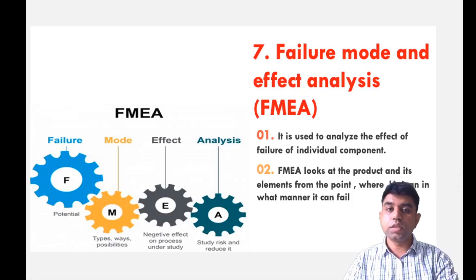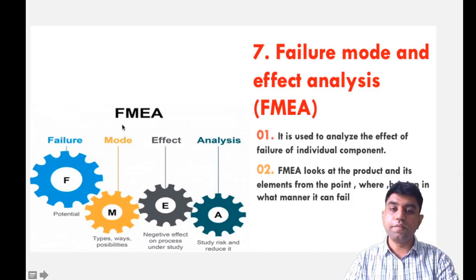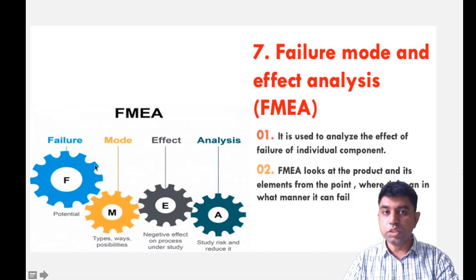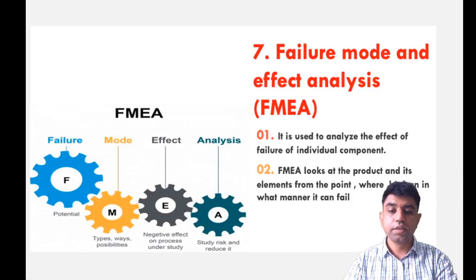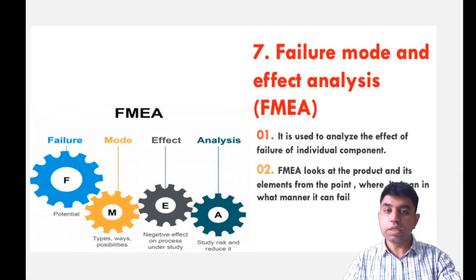Let us elaborate FMEA. F is for Failure, finding the potential causes. M is for Mode, identifying which types of failures or possibilities exist. E stands for Effect, determining the negative consequences if the component fails. A is for Analysis, studying the risk of failure effects and how to reduce them. These are the four things we focus on.